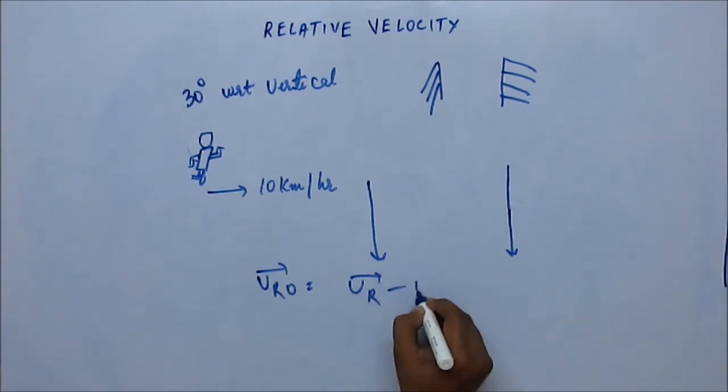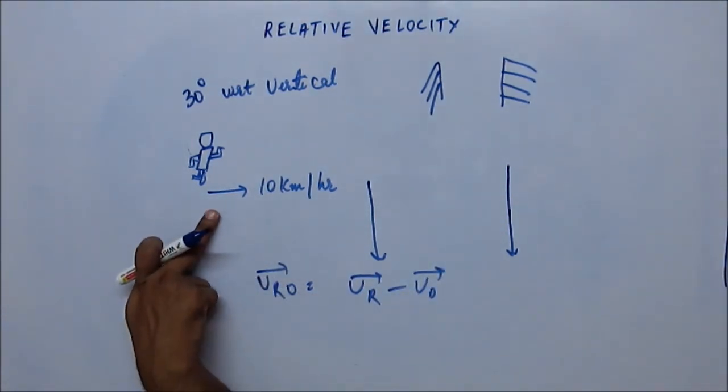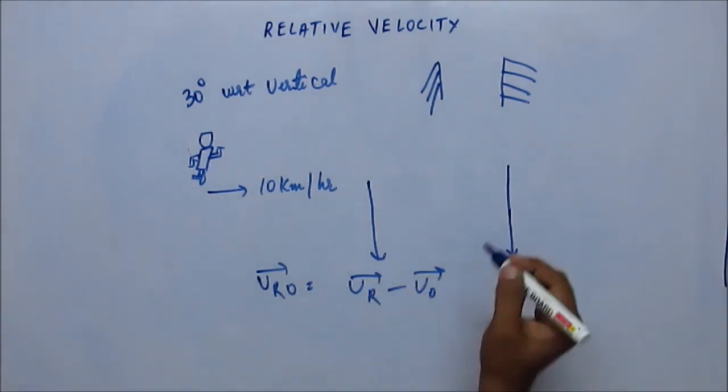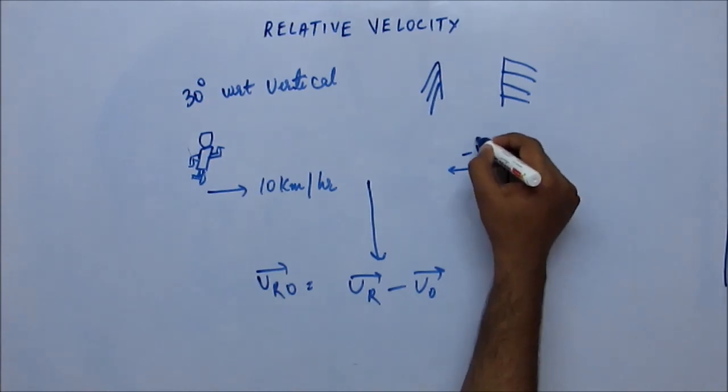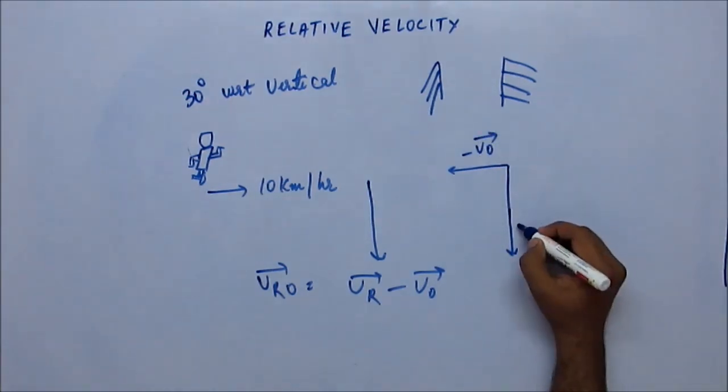With respect to observer is velocity of rain minus velocity of observer. Velocity of observer is given like this—10 kilometers per hour to the right. So minus VO, this is minus VO. This is velocity of rain. This is velocity of rain with respect to observer.